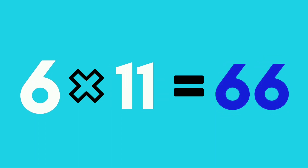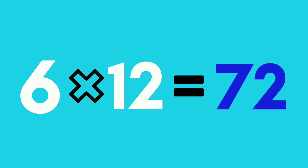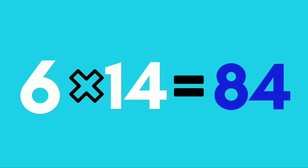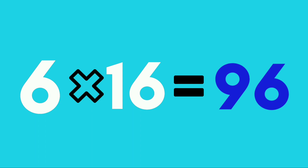Six elevens are sixty-six. Six twelves are seventy-two. Six thirteens are seventy-eight. Six fourteens are eighty-four. Six sixteens are ninety-six.